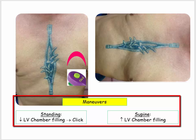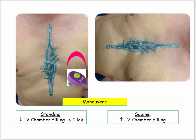In the supine position, however, the LV chamber, by virtue of lying down, has increased venous return and thereby distention or pull on the chordae tendineae. The click disappeared.